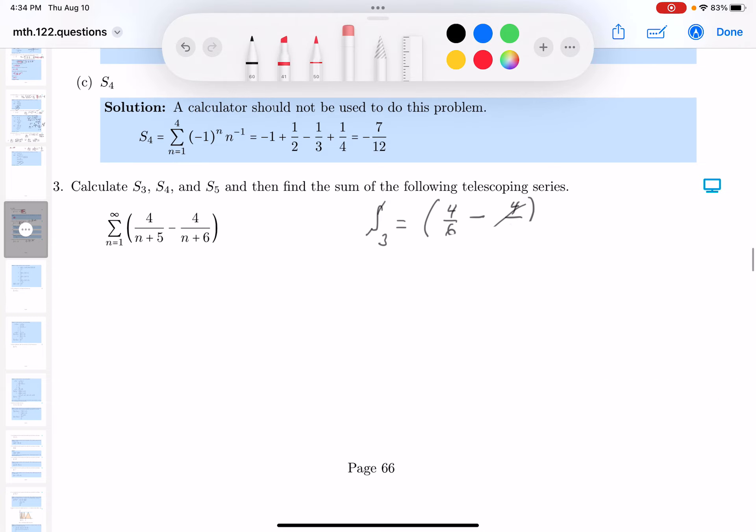We call it a telescoping sum. So what I want to do is I want to write down Sn. Now, someone says, I wonder what Sn is. Sn is the sum, little n equals 1 up to big N, 4 over n plus 5 minus 4 over n plus 6. And again, I want to remind you, we already did these three.